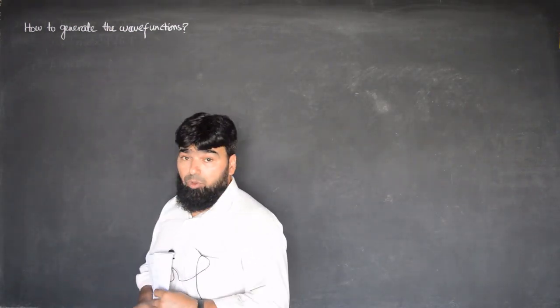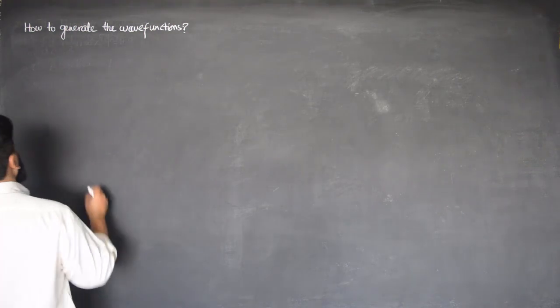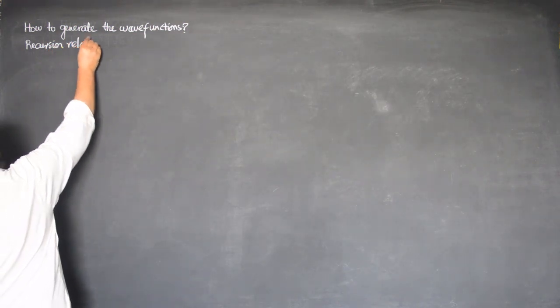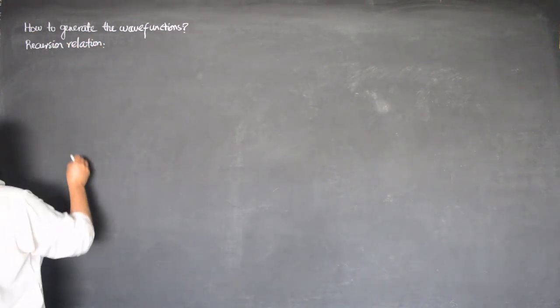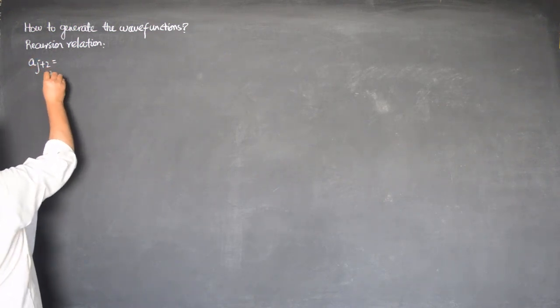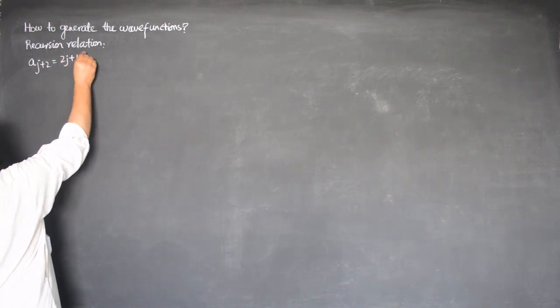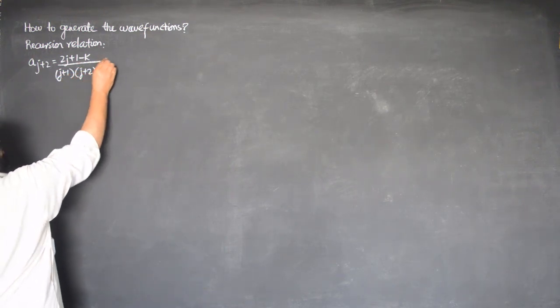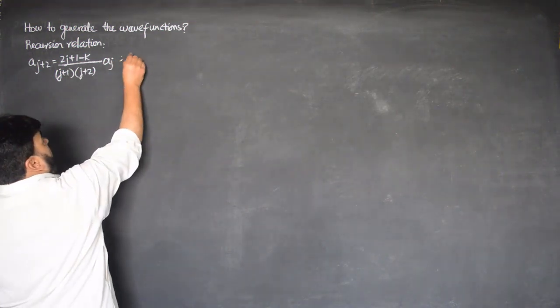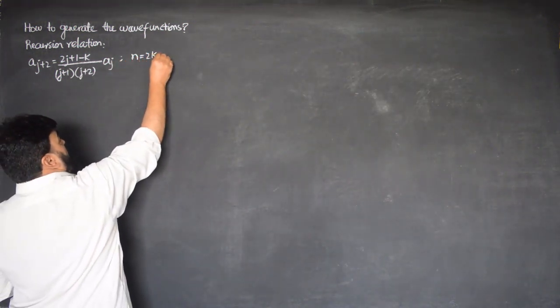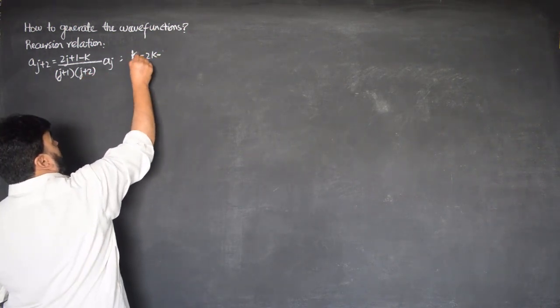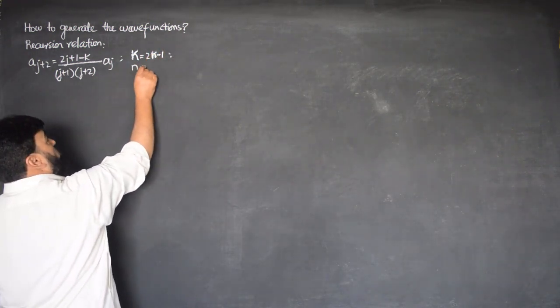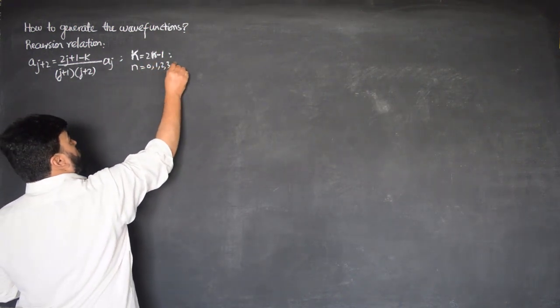Now we will discuss how to generate the wave functions. As we know, the recursion relation is a_{j+2} equals (2j+1-k)/(j+1)(j+2) times a_j. We derive that n equals 2k, that k equals 2n minus 1, where n was equal to 0, 1, 2, 3, and so on.